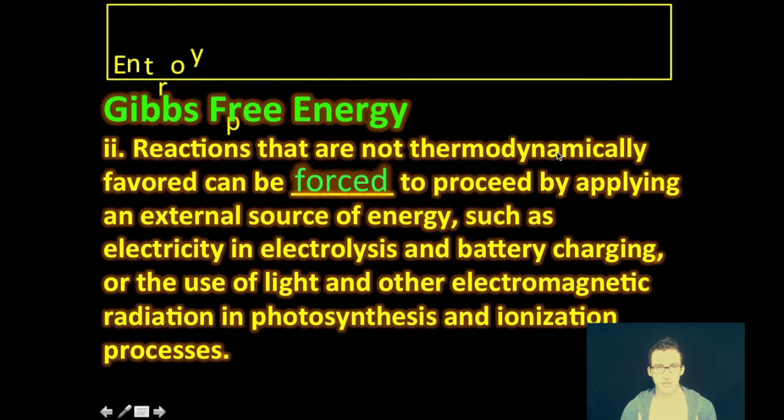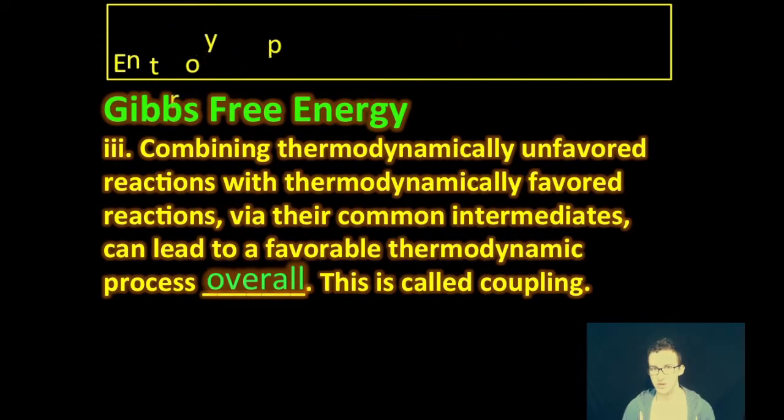Second thing to think about here with Gibbs free energy change is that reactions that are not thermodynamically favored can be forced to proceed by applying that external source of energy. Again, a really great example is to go back to our electrochemistry unit. Think about those rechargeable batteries, forcing that reaction to proceed by inputting some source of energy there. And then lastly, as you think about Gibbs free energy, you can also combine thermodynamically unfavored reactions with a thermodynamically favored reaction via what are called their common intermediates. And we'll talk more about that in the next unit. But that can lead to an overall favorable thermodynamic process. And that is known as coupling.